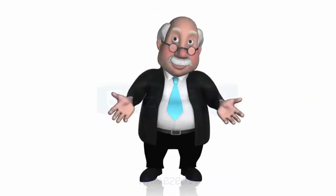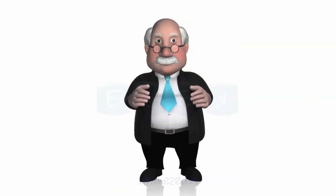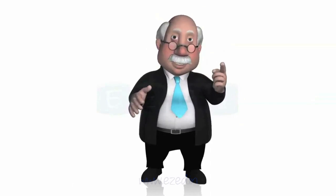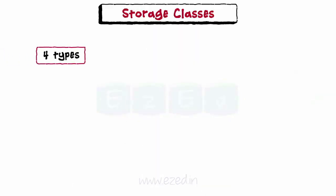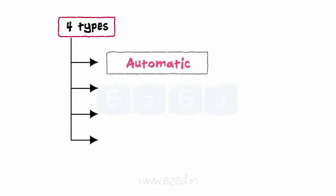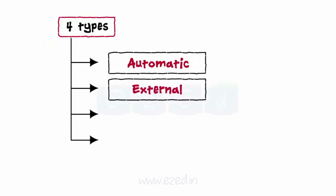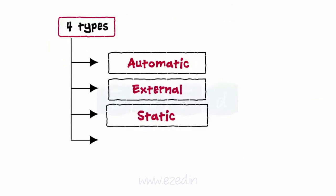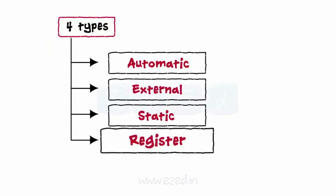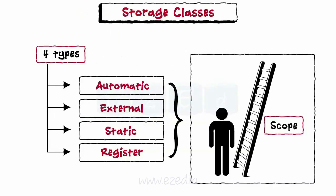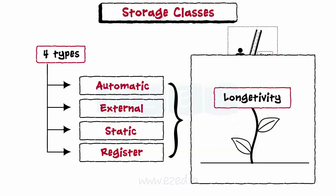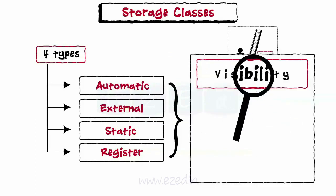Pay attention — this is important. There are four storage classes in C: Automatic, External, Static, and Register. Each of the above classes of variables has scope, longevity, and visibility.